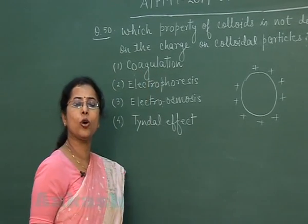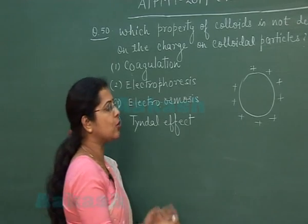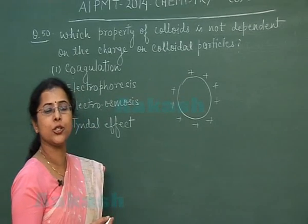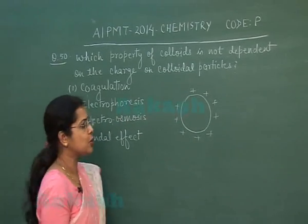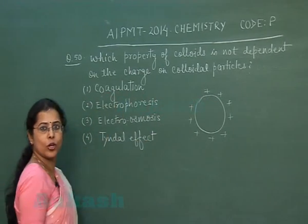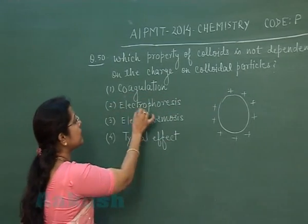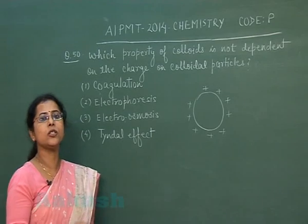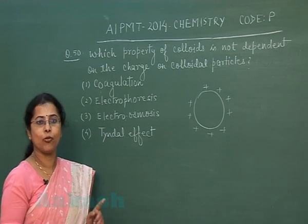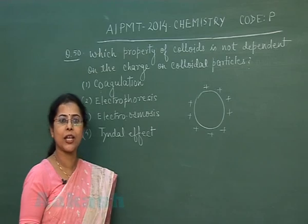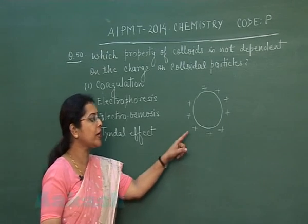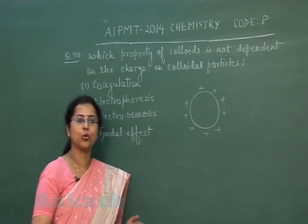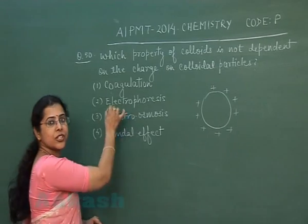The first option is coagulation — the conversion of colloidal solution into a precipitate. That conversion is due to neutralization of charge, so particle charge is essential for coagulation. The second option is electrophoresis — the movement of dispersed phase particles toward respective electrodes in an electric field. Particles move toward cathode or anode according to their charge, so charge is essential here too.